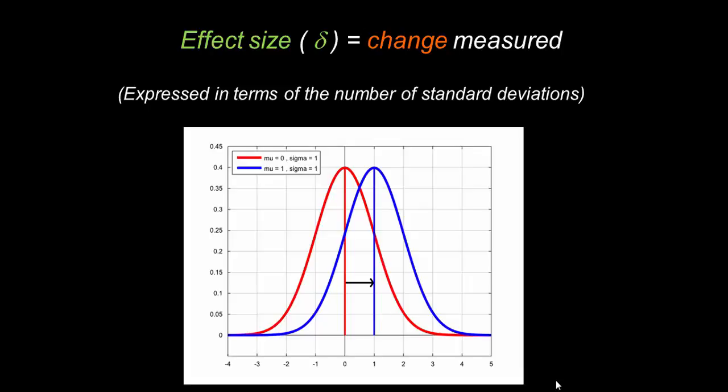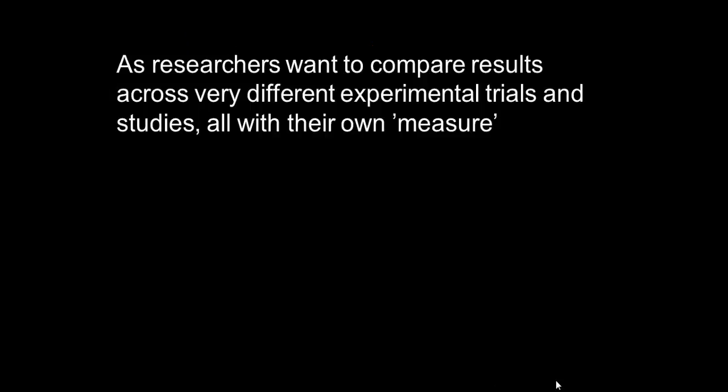Now recall the standard deviation is simply a measure of the spread of a data set. It's back to that concept of variability again. And the reason we use effect size is because often researchers want to compare their results, sometimes of course very different experimental trials and studies, maybe all with their own versions of measure. Imagine comparing changes with weight versus changes with height - you're using different units. So the effect size as measured by the shift in standard deviation gives a way of equalizing measure to some degree.